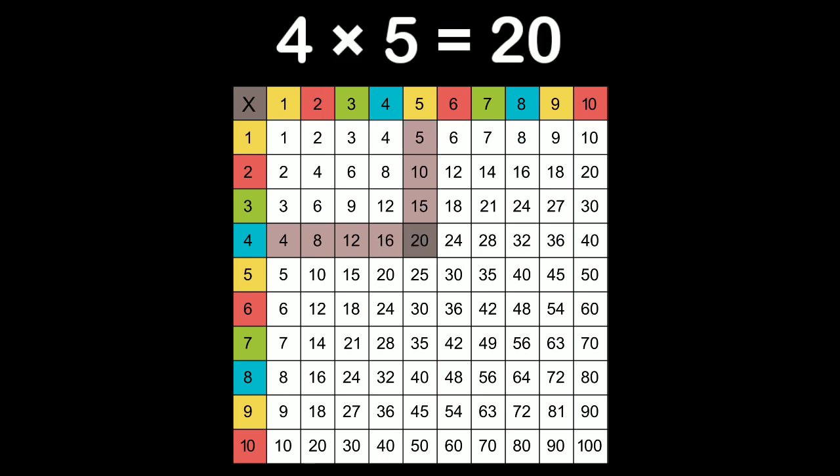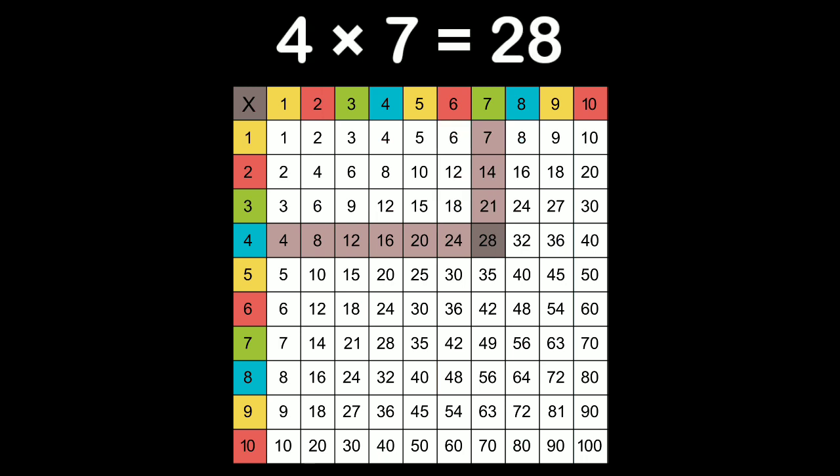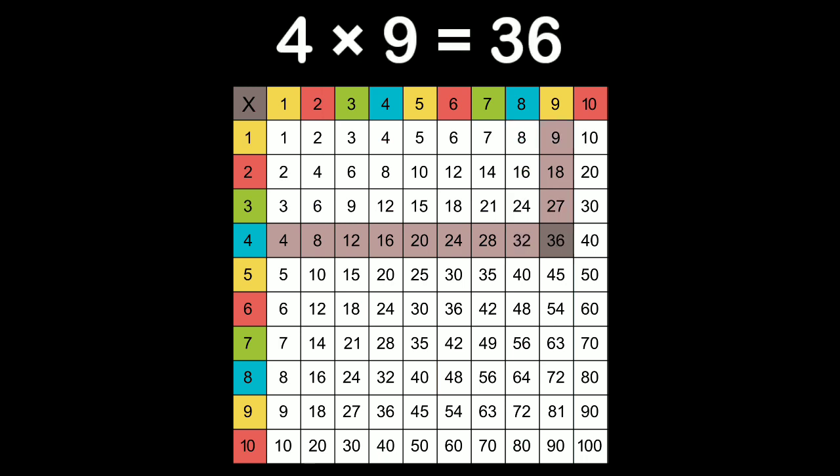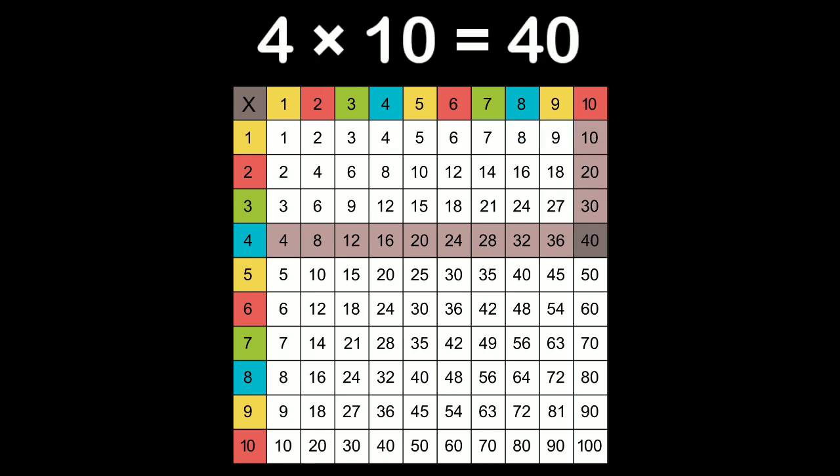Four times five is twenty, and four times six is always twenty-four. Four times seven will give you twenty-eight, and four times eight is thirty-two. Here's more. When you do four times nine, it will give you thirty-six, and four times ten equals forty within this mix.